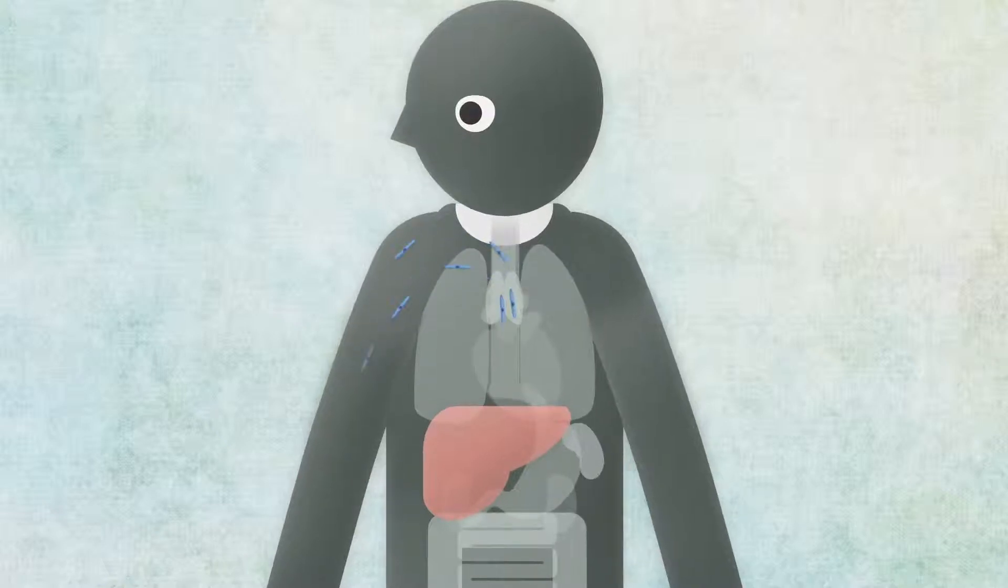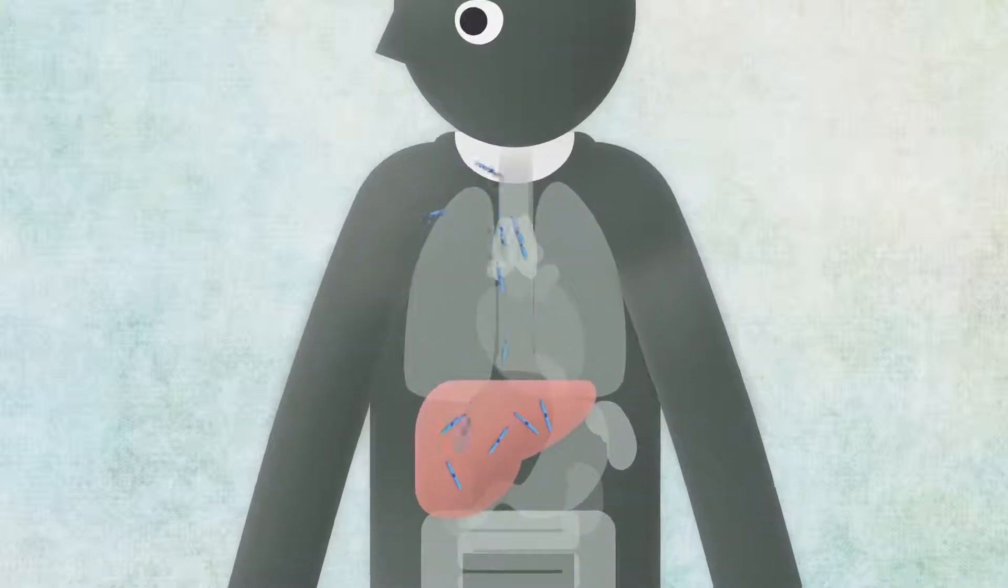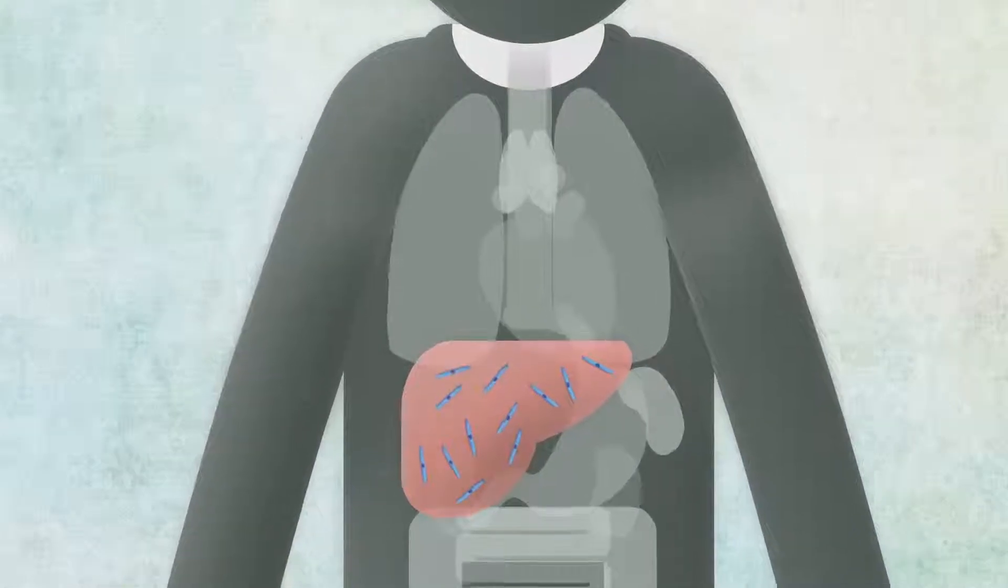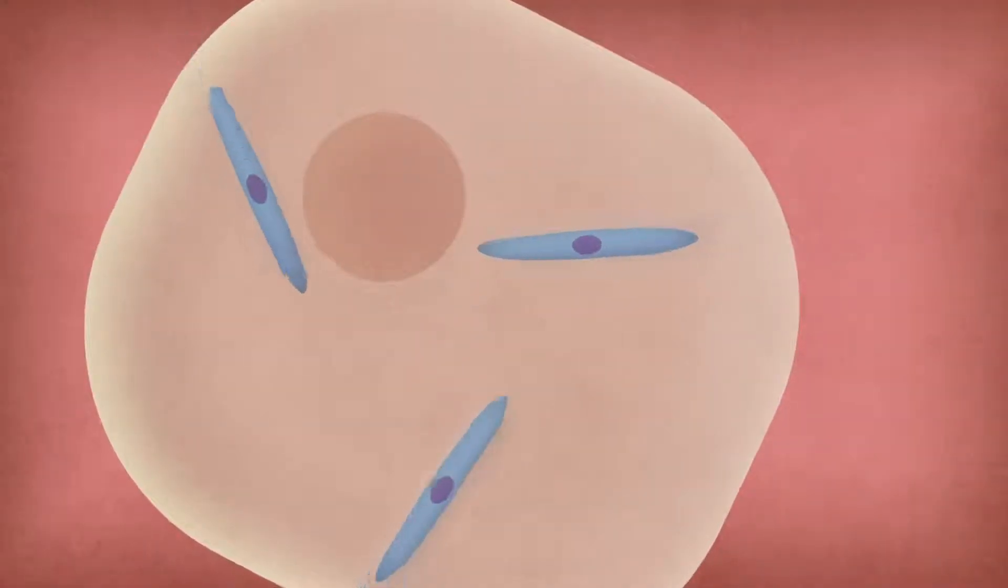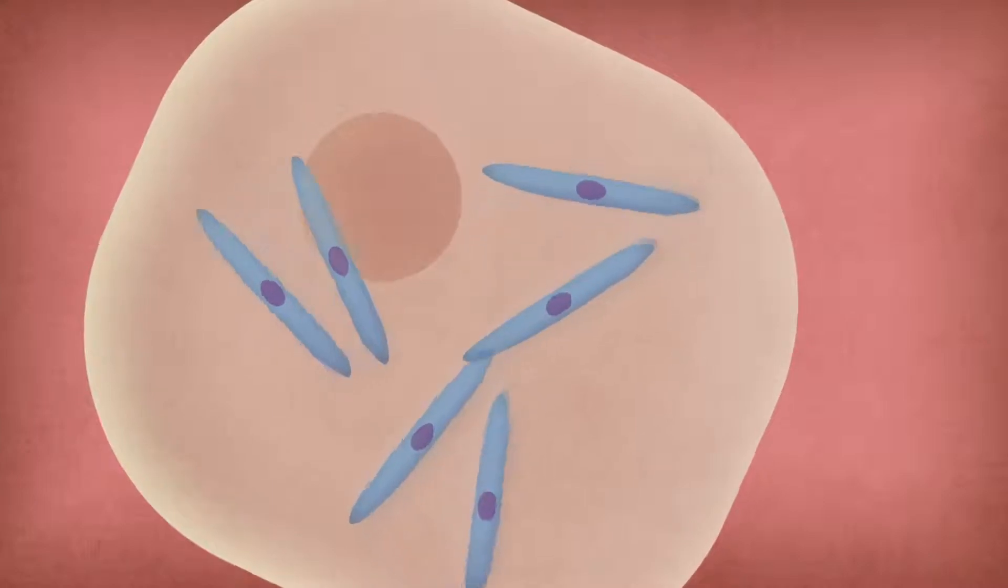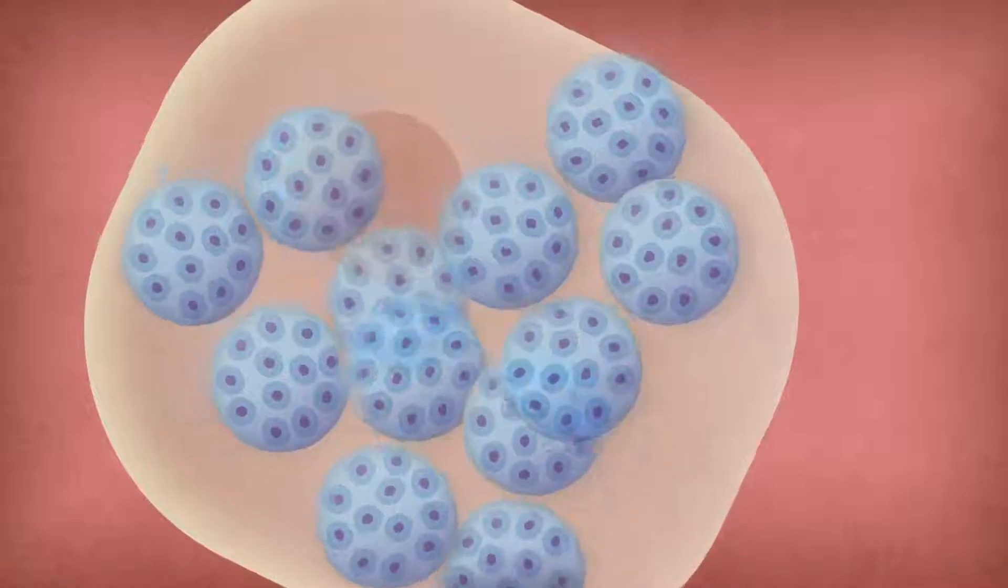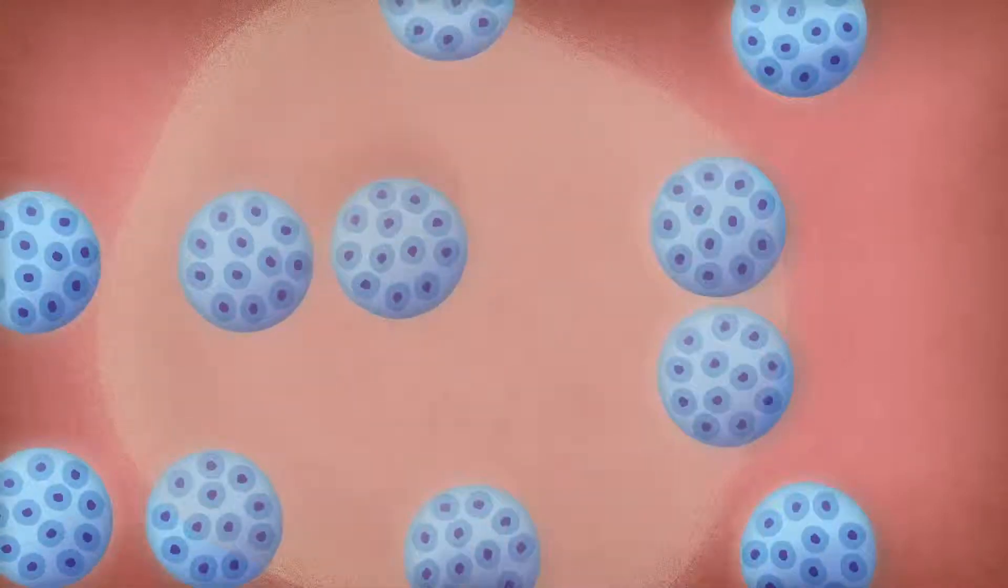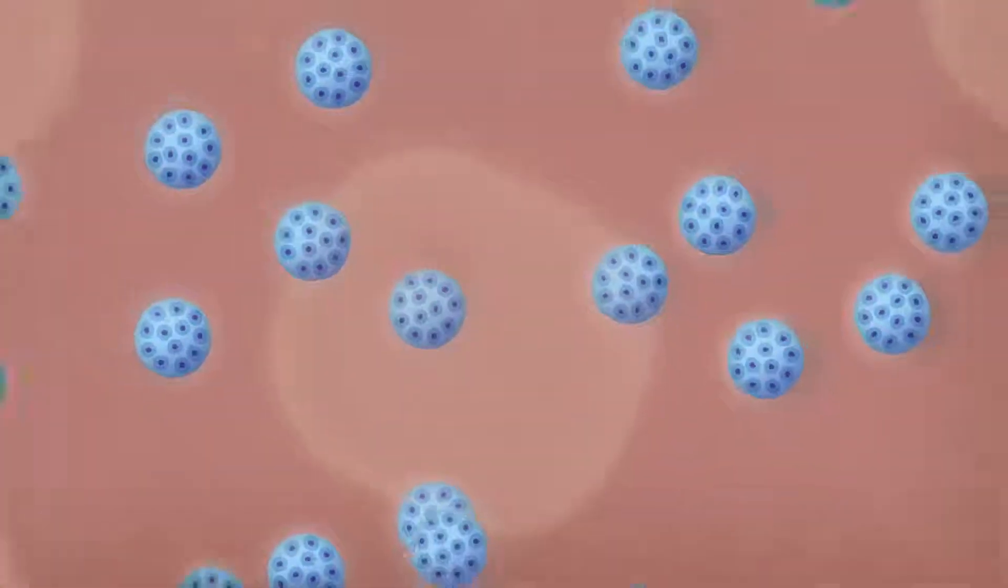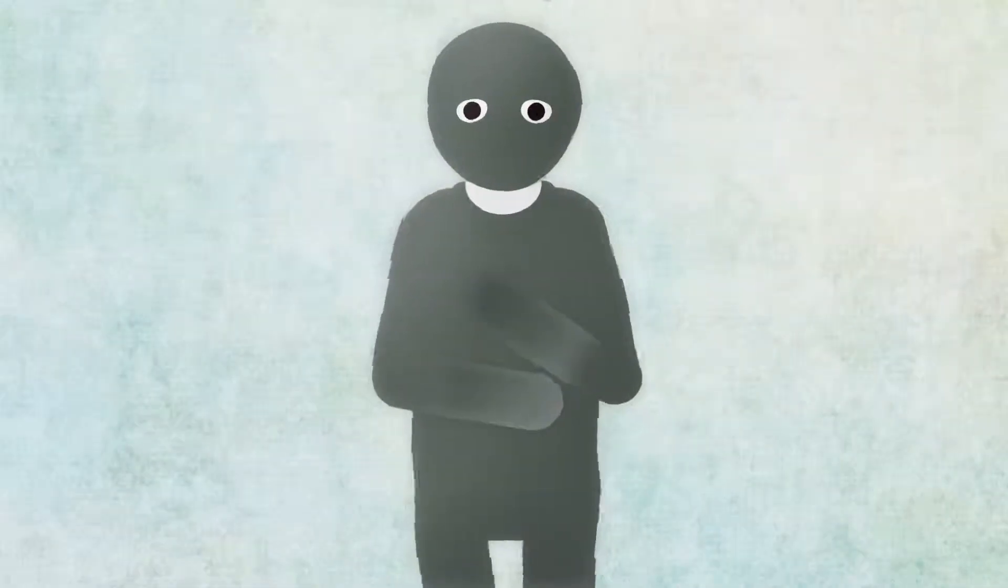The parasite's first stop on its journey through the bloodstream is the liver. At this stage, there is no immune response, and the parasite is free to infect the liver cells and multiply, until the point at which the liver cells rupture, releasing vast quantities of parasites into the blood, and provoking the first symptom, shivering.